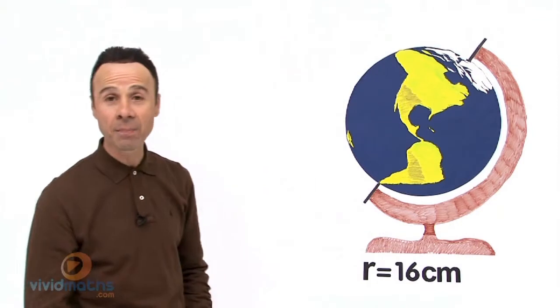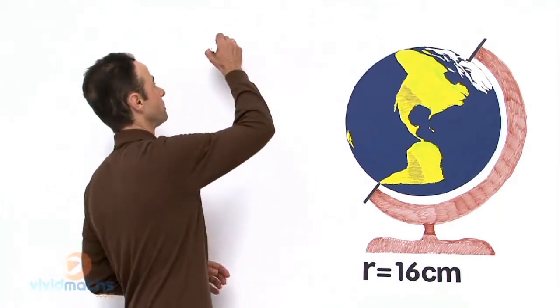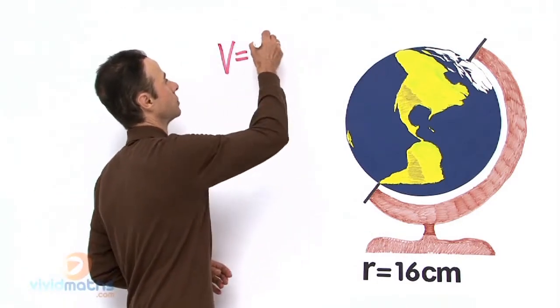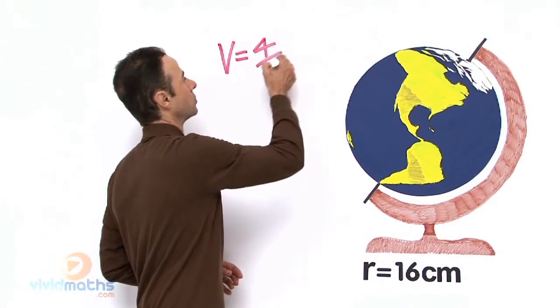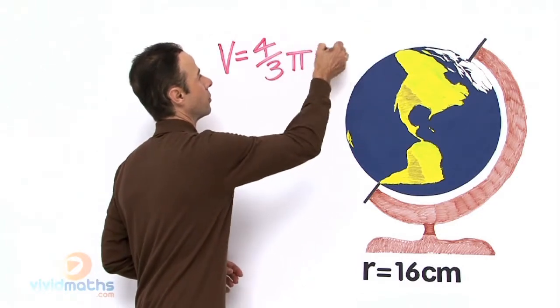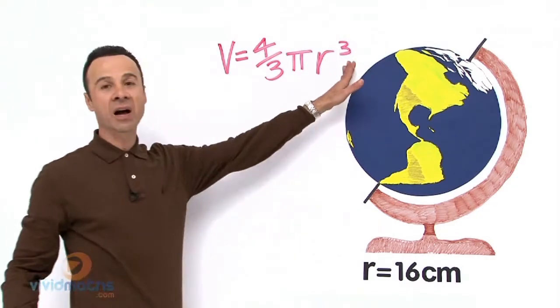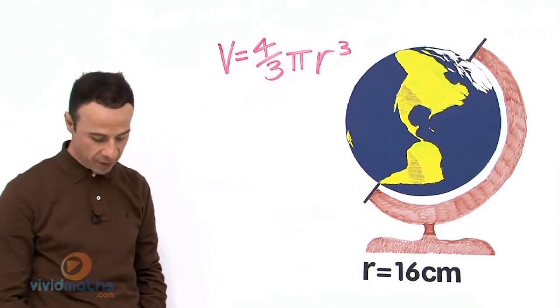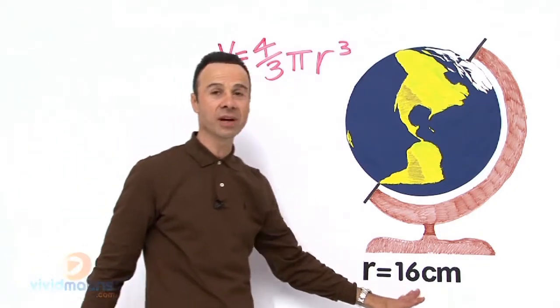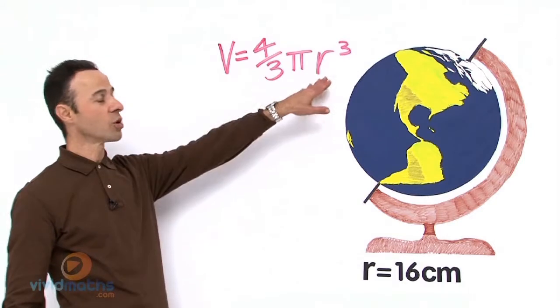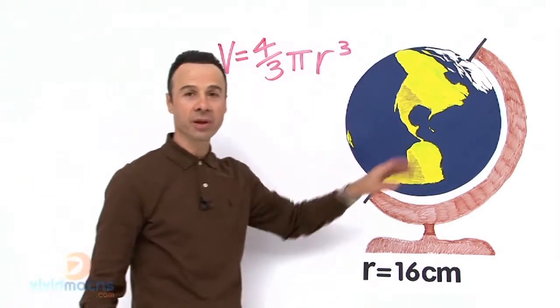So let's do that now. I'm going to write up the formula: V = 4/3πr³—that's r to the power of 3 for the radius. That's our radius down here. We're going to take this, drag and drop it in there, and come up with the answer.